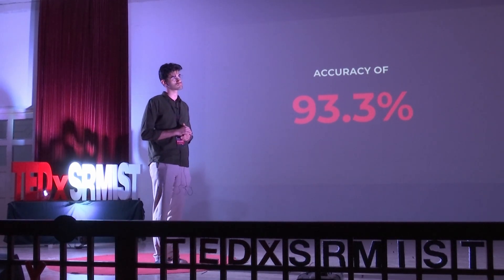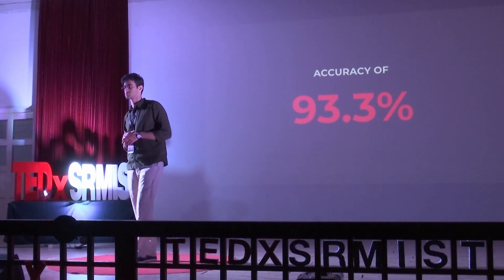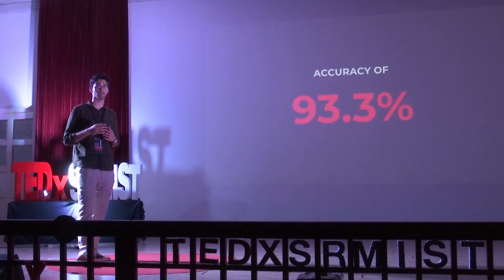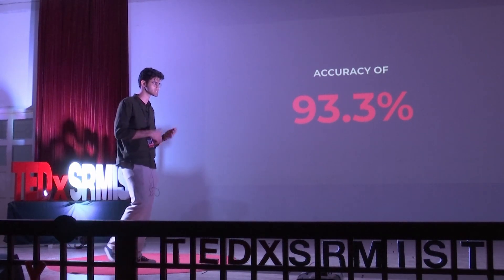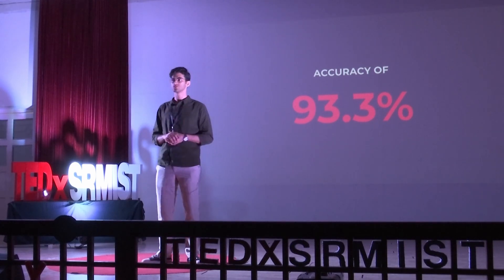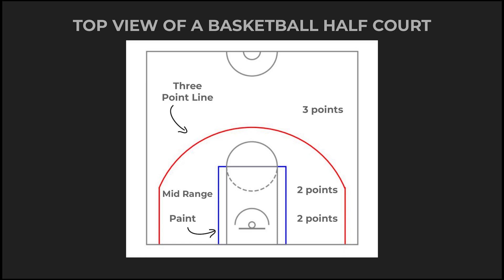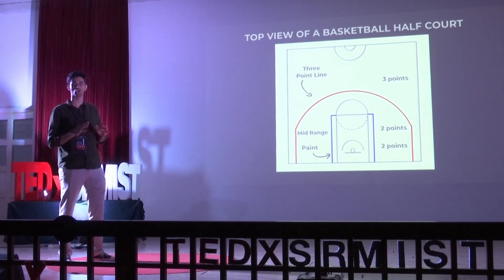Analytics is not just about tracking data and making predictions — we also have to see what differences it makes at the ground level and what strategy changes have come into place. Looking at basketball: the highlighted red line is called the 3-point line, as seen in this top view of a basketball court. If a player makes a shot from beyond the 3-point line, they score 3 points; from within the line, they score 2 points. This is the basic scoring scheme of basketball.